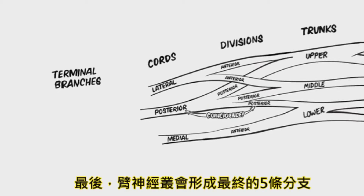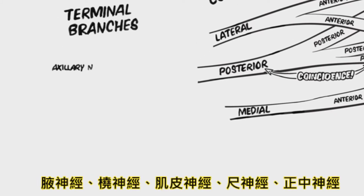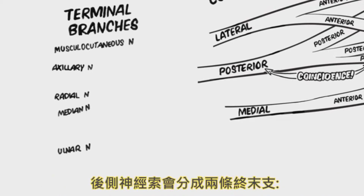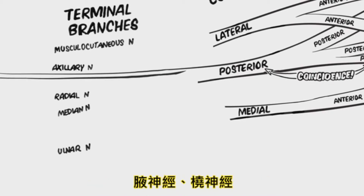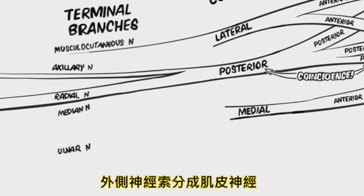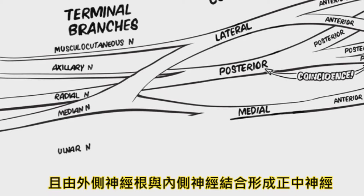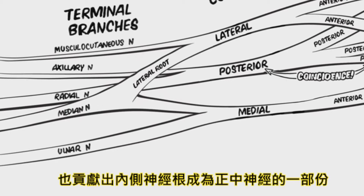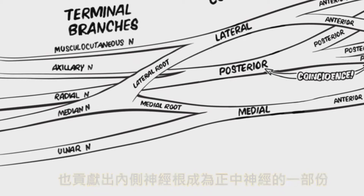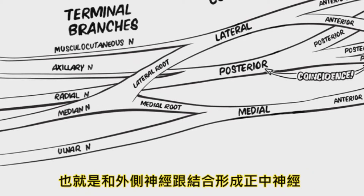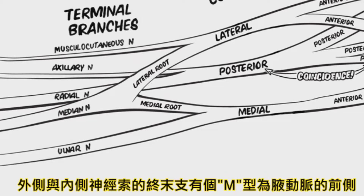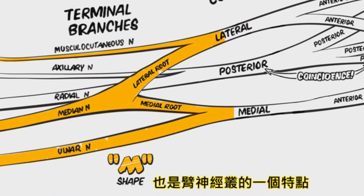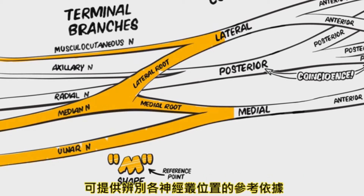Finally, the brachial plexus will form its five terminal branches: the axillary nerve, radial nerve, musculocutaneous nerve, ulnar nerve, and median nerve. The posterior cord divides into the axillary nerve and the radial nerve. The lateral cord divides into the musculocutaneous nerve and contributes the lateral root of the median nerve. The medial cord divides into the ulnar nerve and also contributes the medial root of the median nerve, which joins with the lateral root to form the median nerve proper. The terminal branches of the lateral and medial cords form the characteristic M-shape anterior to the axillary artery, which is usually the most distinctive feature of the brachial plexus and serves as a reference point for locating and identifying the other components of the plexus.